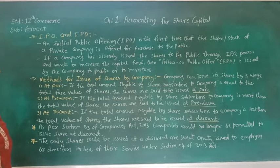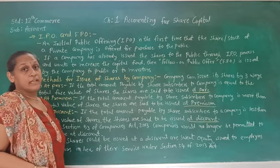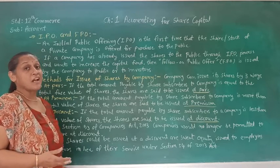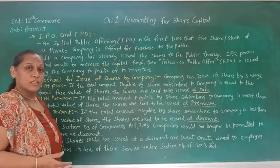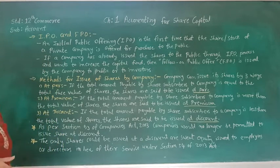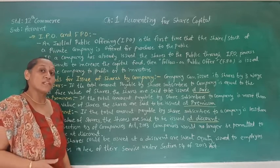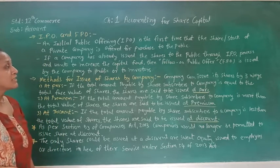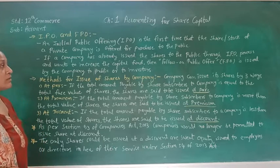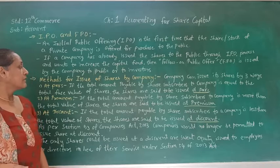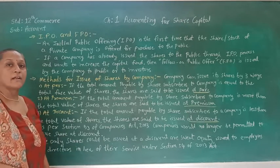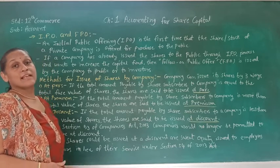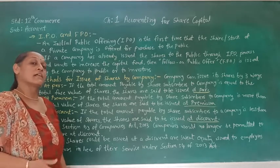Now let's see the methods for issue of shares by a company. The company can ask the public to invest in the company, and there are three ways to issue shares. The first is at par. At par means shares are issued at the face value of the shares. So if the total amount payable by the share subscriber to the company is equal to the total face value of the shares, the shares are said to be issued at par. Whatever the actual face value of the share is, if the share is issued at that value to the investor, that is called issue at par.